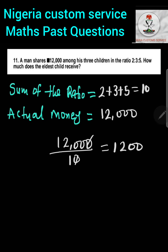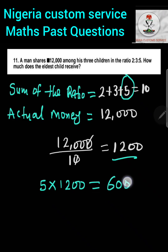The question asks how much the eldest child receives. The eldest child takes the biggest ratio, which is five. So we multiply five by one thousand two hundred, which gives us six thousand naira. That is how much the eldest child receives.